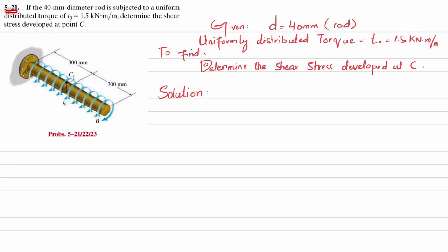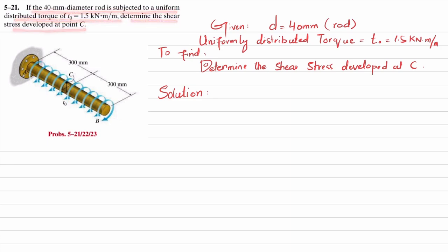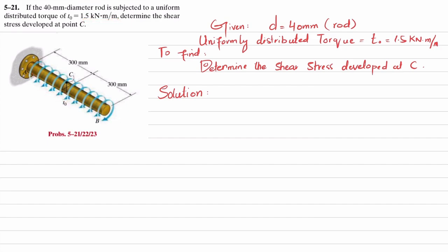Welcome back. Problem 5-21. The statement is: if a 40 millimeter diameter rod is subjected to a uniform distributed torque of 1.5 kilonewton·meter per meter, determine the shear stress developed at point C. The diameter of the rod is given as 40 millimeters and the uniformly distributed torque is 1.5 kilonewton·meter per meter.